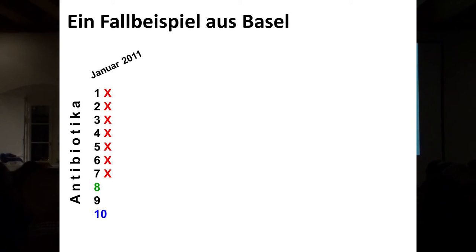Nun fragen Sie sich vielleicht, inwiefern das eine Relevanz hat für die Schweiz. Ich habe vorhin erwähnt, dass die Tuberkulose über die Luft übertragen wird. In der heutigen Ära der Globalisierung und dem extremen Flugverkehr kann man Keime in 24 Stunden um die Erde herum transportieren. Ich möchte das mit einem Fallbeispiel illustrieren, das in Basel angefangen hat: Es geht um einen tibetanischen Flüchtling, der im Januar 2011 mit einer Tuberkulose in Basel diagnostiziert wurde. Man hat dann ziemlich schnell herausgefunden, dass diese Bakterien gegen sieben der wichtigsten Tuberkulose-Medikamente schon resistent waren.